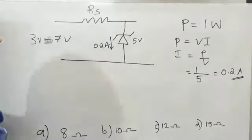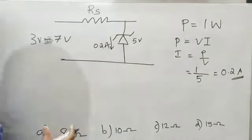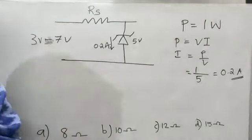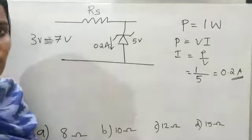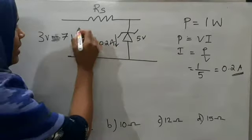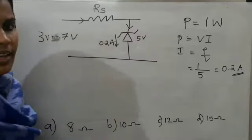Our question is, if the input voltage varies between 3 and 7V, what should be the value of RS for safe operation of Zener regulator? This is a simple network. The same current flowing through RS will be flowing through this Zener diode.